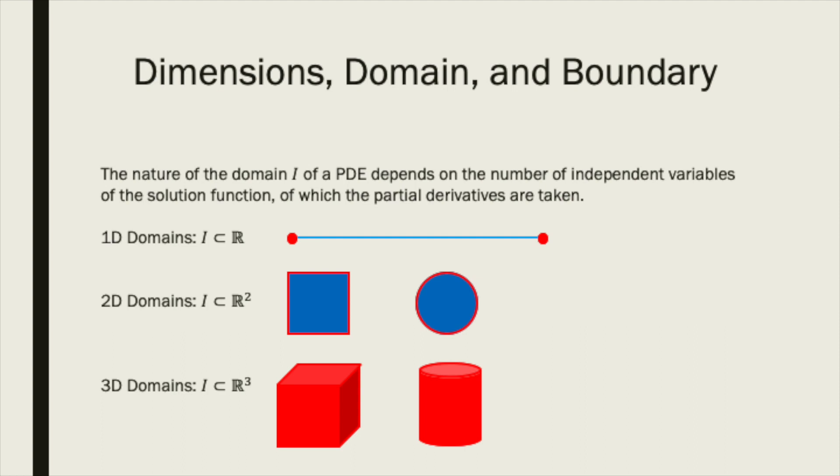For a PDE with two independent variables, the domain will be some planar subset of the two-dimensional real numbers, R2. In theory, the domain could be specified as any planar shape. The blue square and circular areas shown here are just two examples. The boundary of this domain will therefore be some curve in the plane, shown here in red.